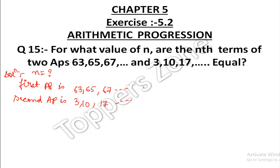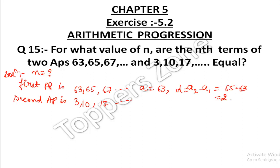From the first AP, the first term a is 63, and the common difference is 65 minus 63 — that is the second term minus the first term — which equals 2.